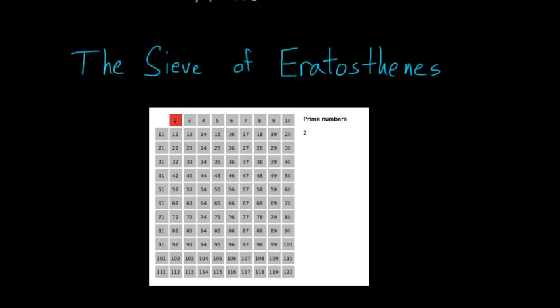So we start with the first prime number, which is two. And then the idea is to eliminate any multiples of that number. So for instance, 4, 6, 8, 10, 12, 14, and so on. Or you can notice, essentially these entire columns get eliminated.